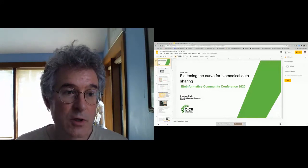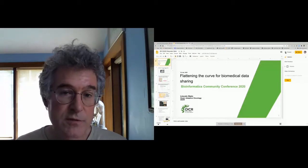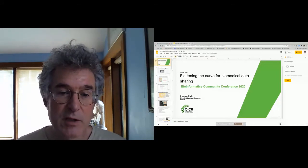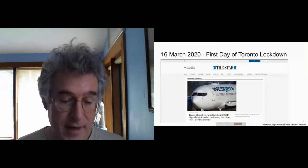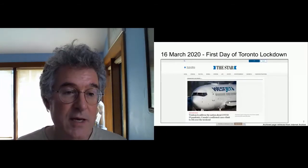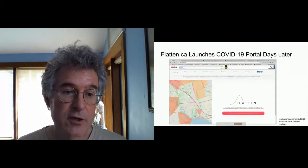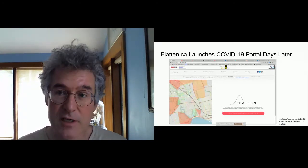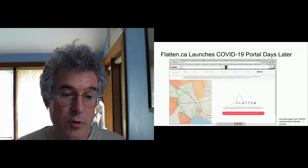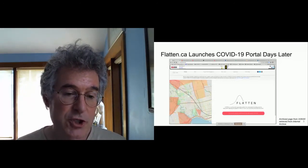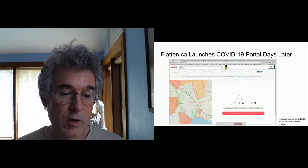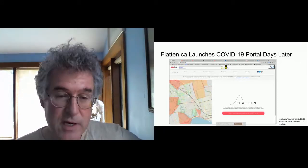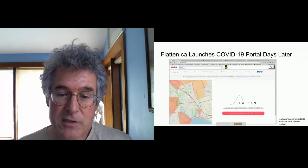We're going to go back to March 16th, 2020, which was the first day that the city of Toronto entered its COVID-related lockdown. This is the front page from the Toronto Star on that day. And amazingly, just about a week later, this website appeared called flatten.ca, which was a COVID-19 information portal. This was a time when there really was no information about who was getting COVID-19, what the risk factors were. The public health agency of Ontario was completely overwhelmed, didn't know what to do. And yet this site suddenly appeared.